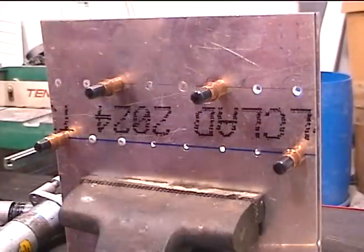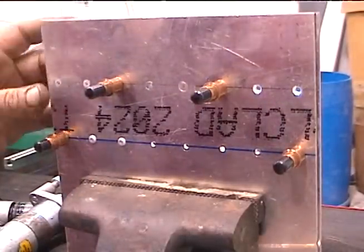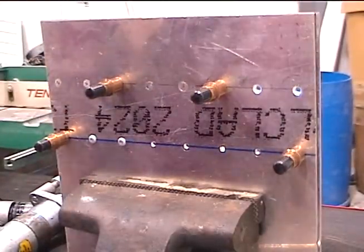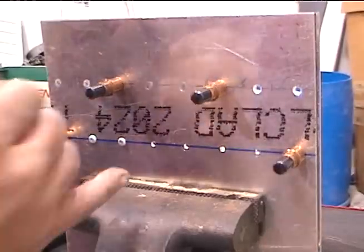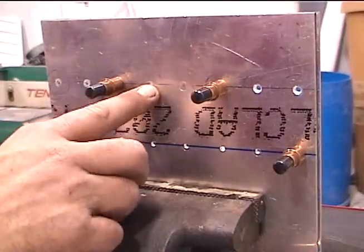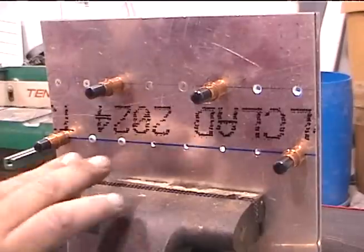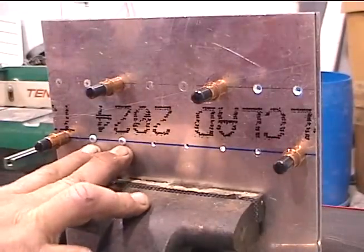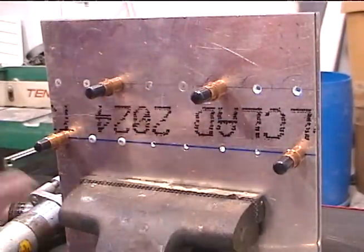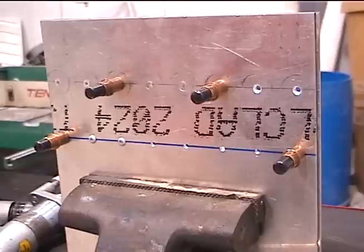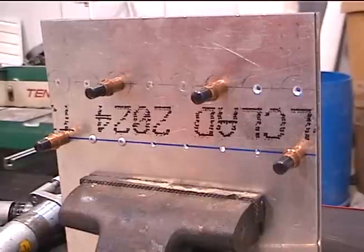But this is to show how to put rivets in and that's about it. So we have two countersunk AD rivets, two countersunk terry mats, two universal head terry mats, and I'll go ahead and buck two standard head.